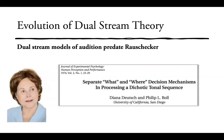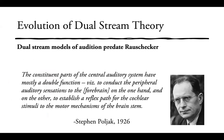In the auditory system, all dual stream models also predate Rauschecker's proposal. Diana Deutsch and Philip Rohl proposed separate what and where mechanisms in processing tone sequences. And even before that, in 1926, Steven Poljak suggested the central auditory system has a double function: conducting peripheral auditory sensations to the forebrain, and establishing a reflex path for cochlear stimuli to the motor mechanisms of the brain stem.